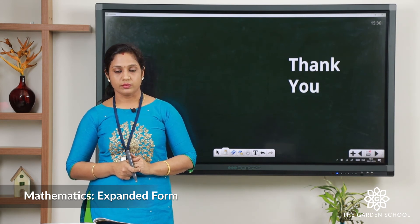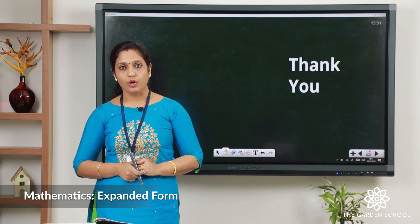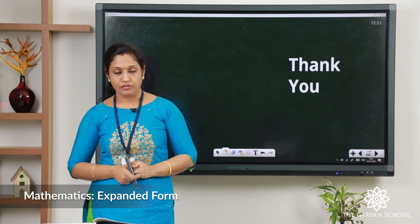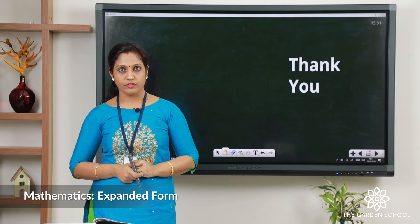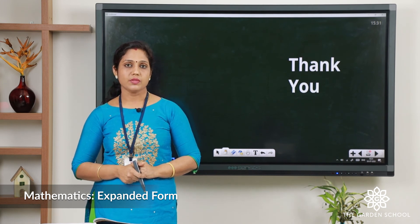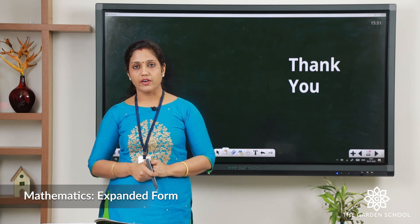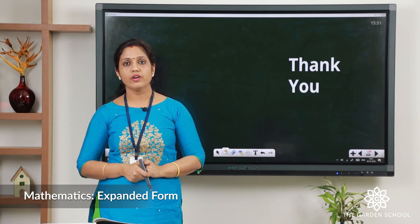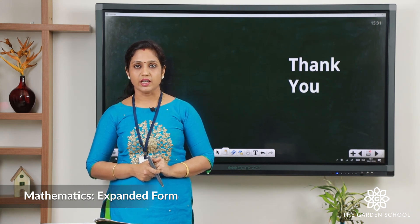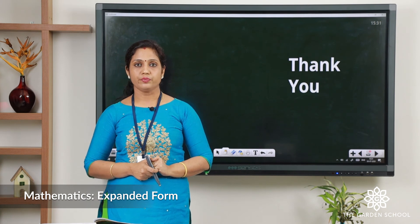Let us move on to the second question: write the place value of each circled digit in the following numbers — number one has been done for you. The first one is 196 — we have to find out the place value of 9. Nine comes in the tens position, so it is 90. Let us do B: 183. We have to find out the place value of 8. Eight comes in the tens position, so it is 80. You can write 80 in that box. Like that you can do the rest of the exercises.